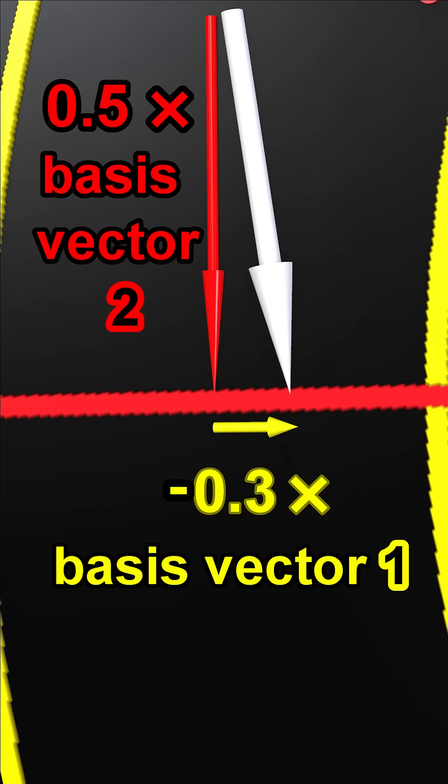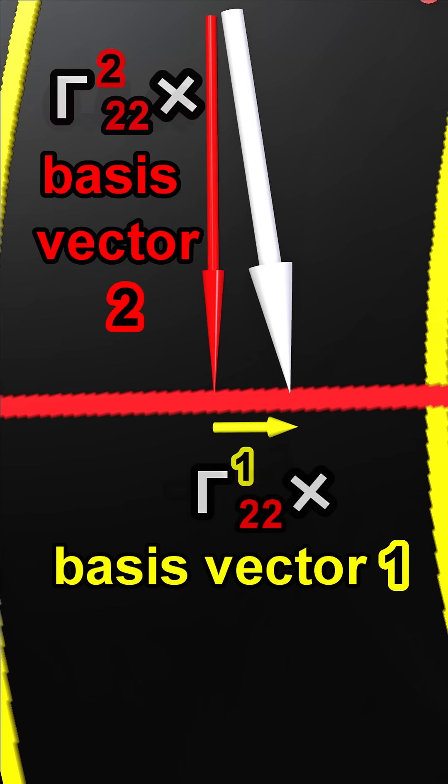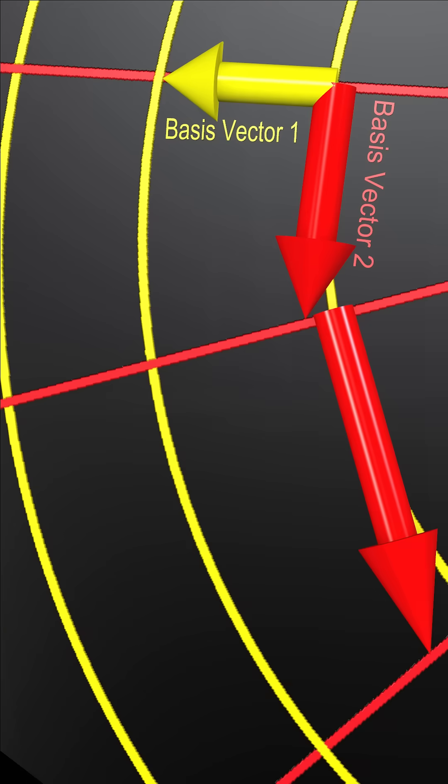Let's replace the numbers with the following symbols, each of which has three index values. The index value at the top indicates which basis vector is multiplying. The two index values at the bottom indicate which basis vector is moving, and in what direction.